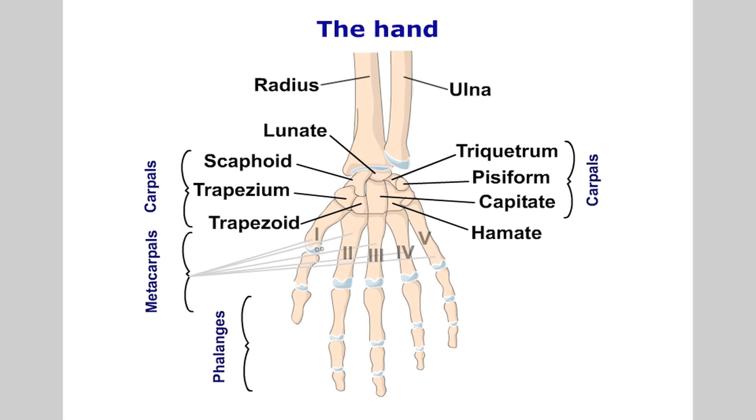The wrist is supported by the collateral, palmar and dorsal ligaments. The hand is formed from a complex network of joints between the carpal, metacarpal and phalangeal bones. The ligamentous structure is intricate and allows the hand to function with flexibility and dexterity but with stability when needed.